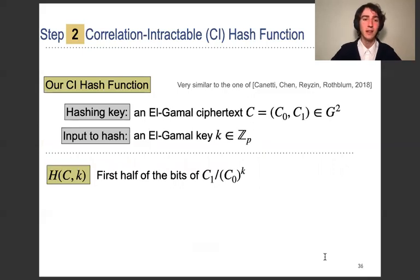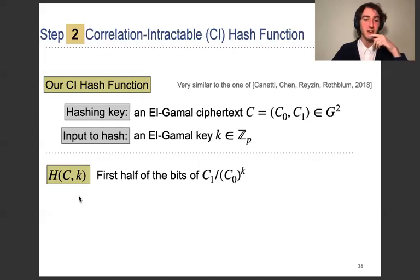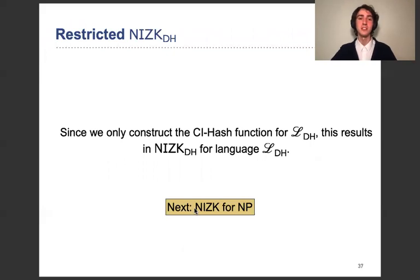Let's look at the actual description of the correlation-intractable hash function — it's very similar to the one used in the previous paper. Basically, the hashing key is an ElGamal ciphertext (C0, C1). The input to the hash is an ElGamal key, so the input is a key and the hashing key is a ciphertext. The hash function represents a partial ElGamal decryption — partial because it doesn't recover the discrete log. It then interprets this as bits and takes just the first half of the bits. Using this correlation-intractable hash function, we transform the Sigma protocol into a secure NIZK.